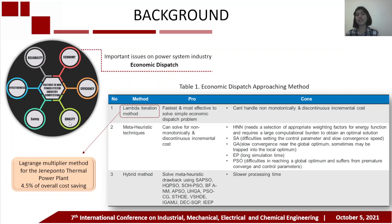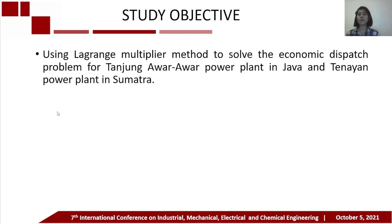There is a study that uses the Lagrange multiplier method for the Paiton thermal power plant and the result gives a 4.5% reduction in overall cost. Because of that, we want to implement the Lagrange multiplier method to solve the economic dispatch problem for Tanjung Awar-Awar power plant in Java and Tanayan power plant in Sumatra.